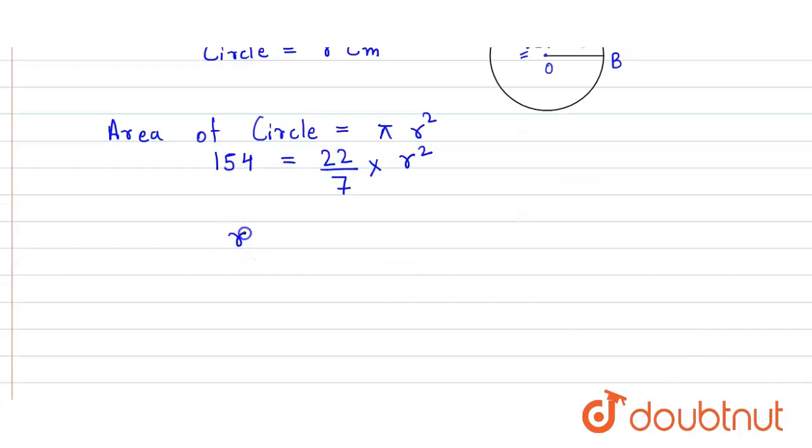So here now we simply solve it. So r squared equals 154 into 7 divided by 22. So this 22 cancels this 154 and here we get 7.